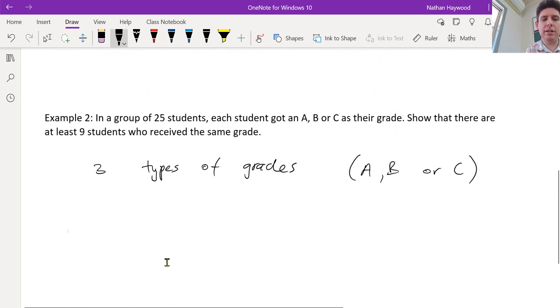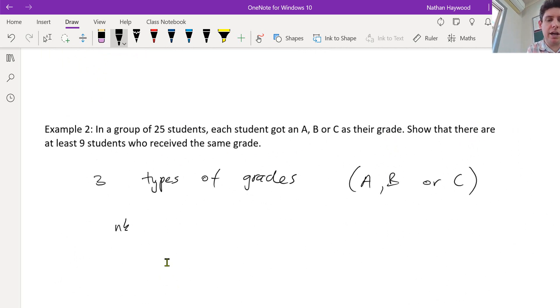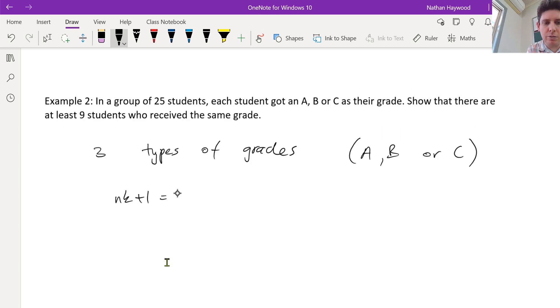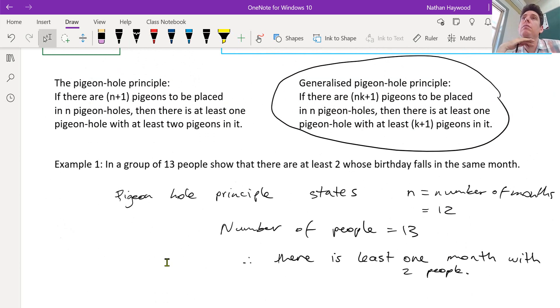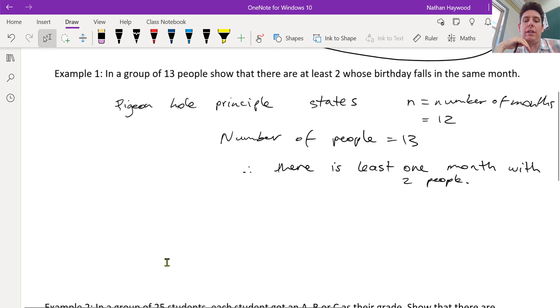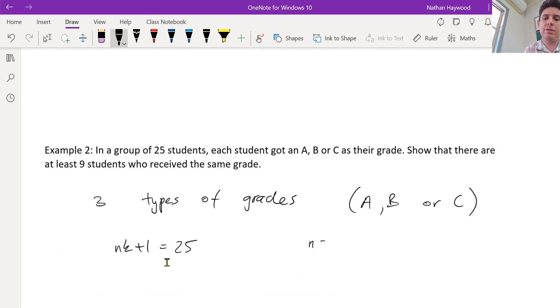And we have 25 students. So nk plus one is 25. What is the type of grades? Is it n or k? N, correct. Yep.